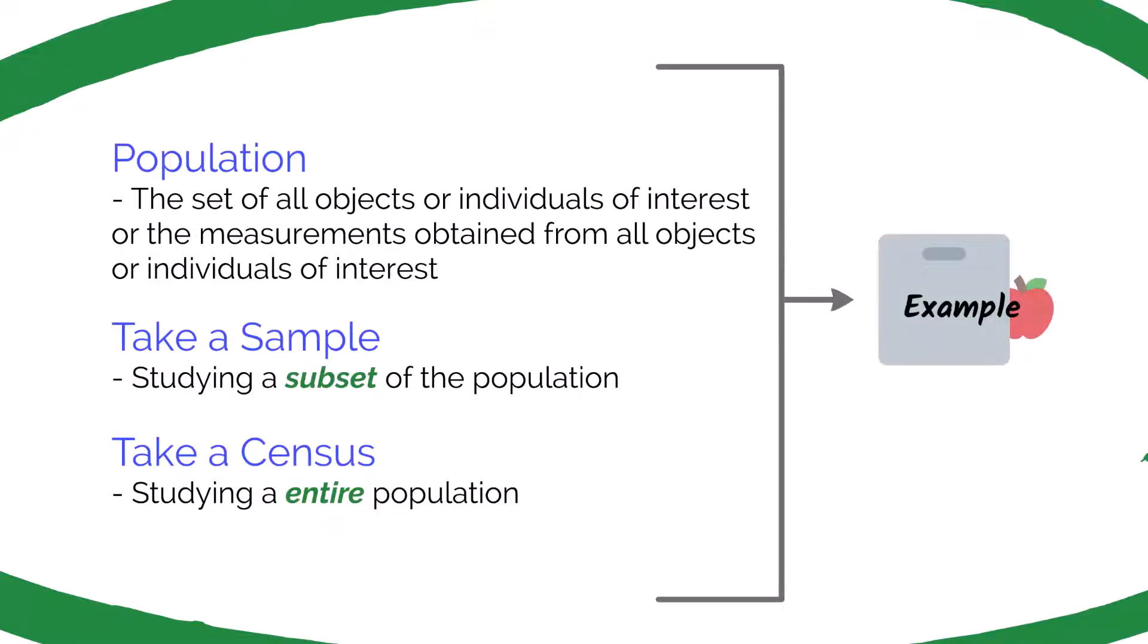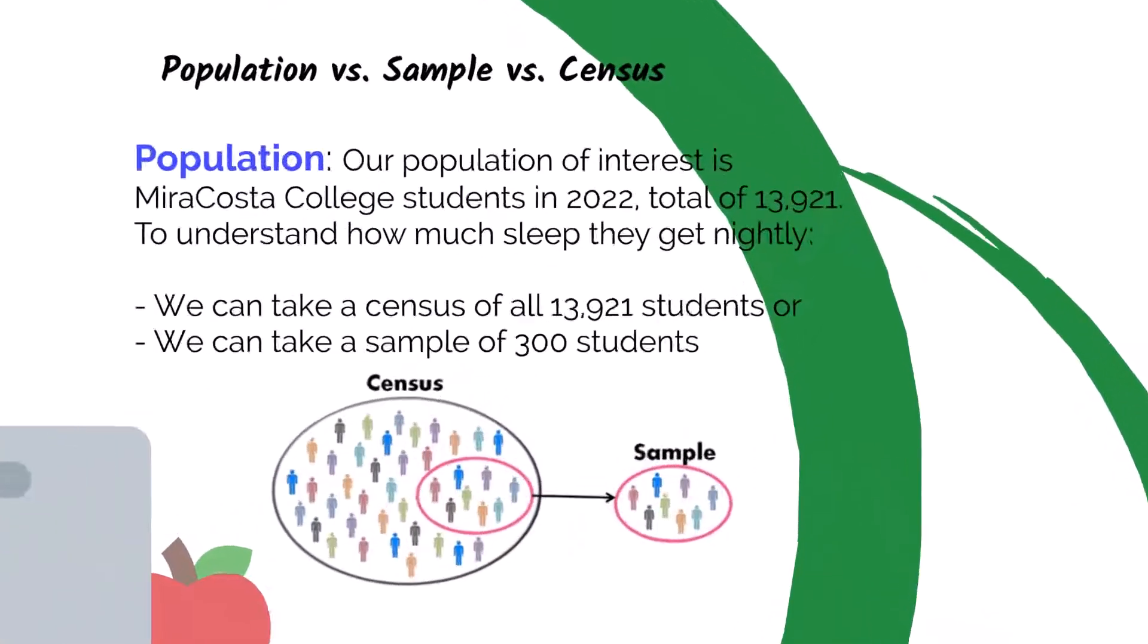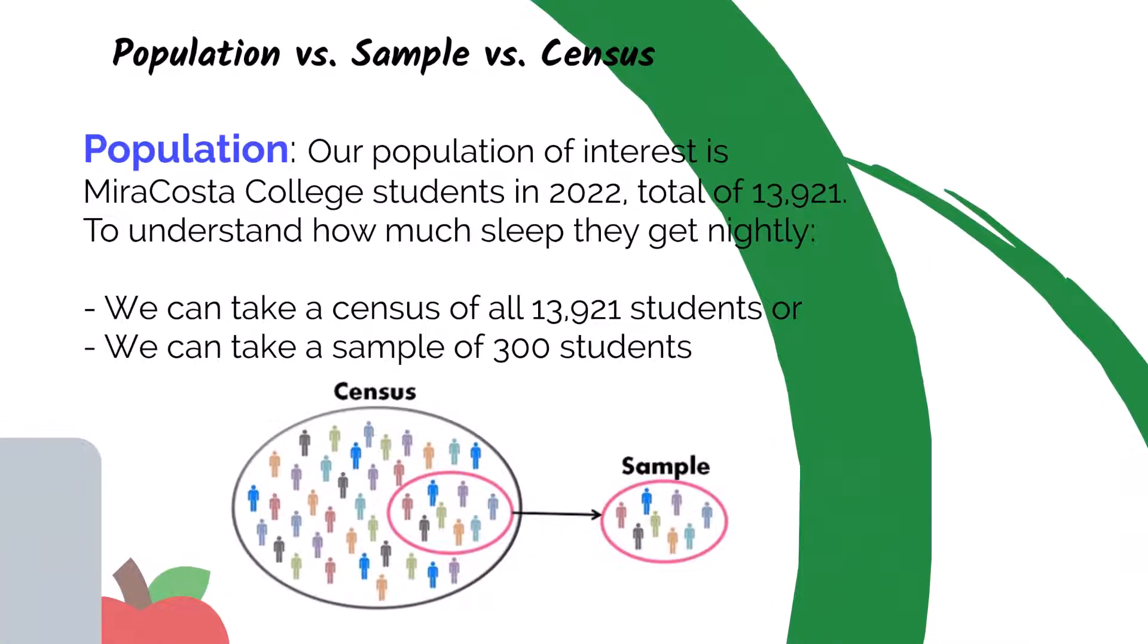Let's take a look at an example. Here, we have a population of interest, which is MiraCosta College students in the year 2022, totaling 13,921 students. To understand how much sleep they get nightly, we could take a census of all the students, or we could take a sample of 300 students to examine. For most organizations, taking a sample is more efficient and cost-effective than studying the entire population.